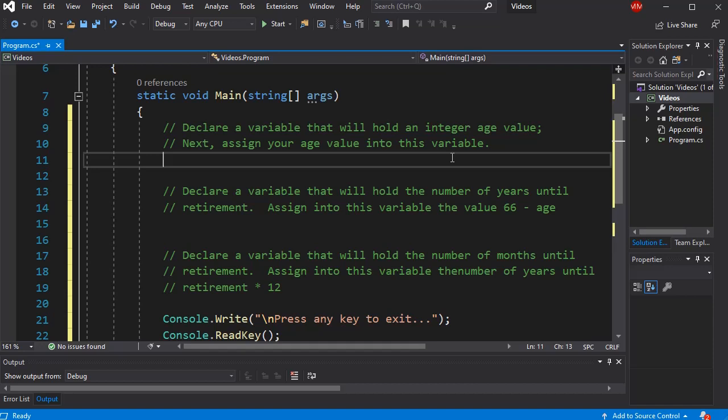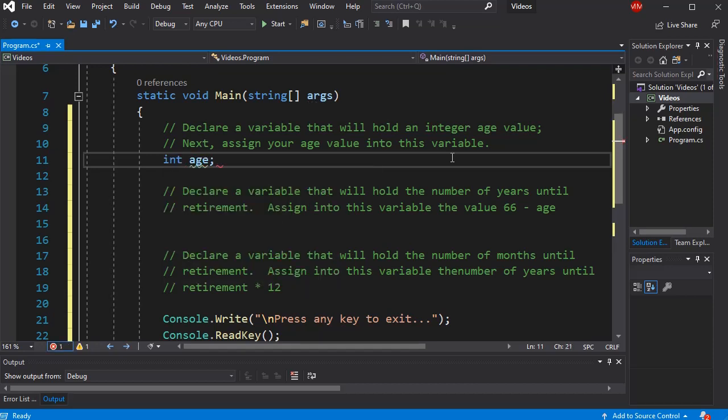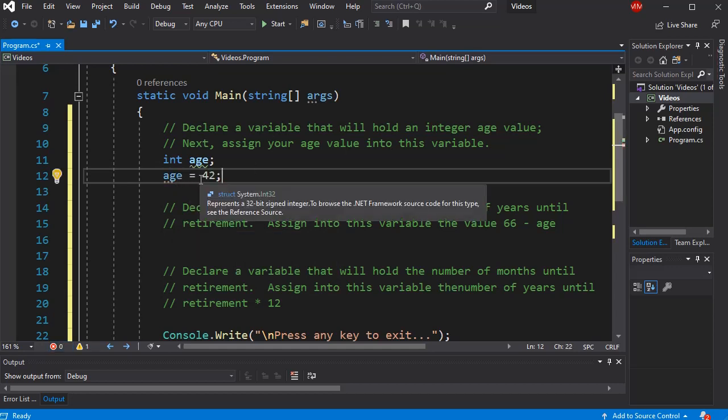To declare the variable, I tie a data type int with a variable name, age. And then I end the statement in a semicolon. I've now created a variable. Now this variable is empty. Let's assign a value into it. I'm going to say age equals 42. I'm using the assignment operator to take a value, a literal value, and assign it into the variable age.